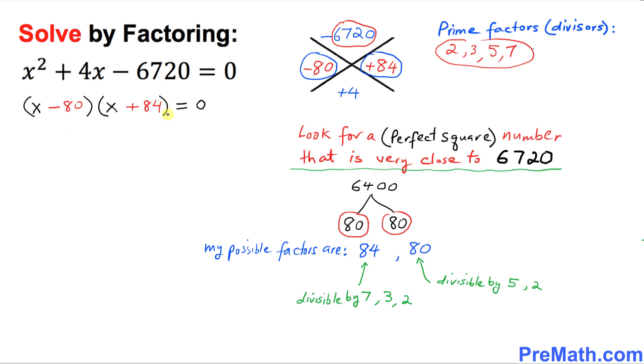Since these two factors equal 0, we can easily separate them. I can write x minus 80 equals 0 and x plus 84 equals 0. That means one solution is x equals positive 80, and the other is x equals negative 84.